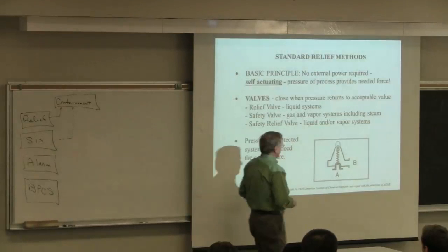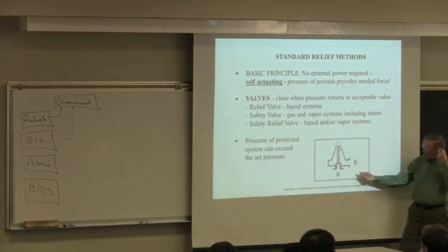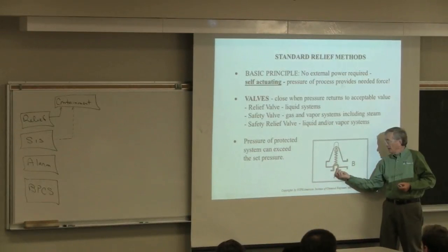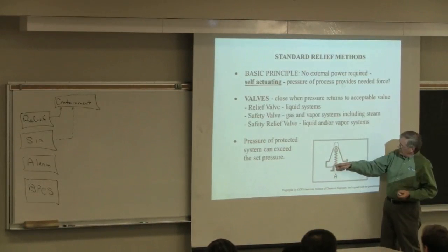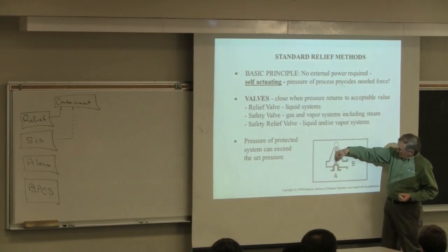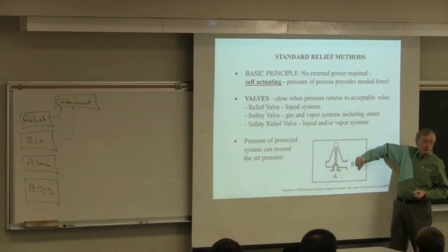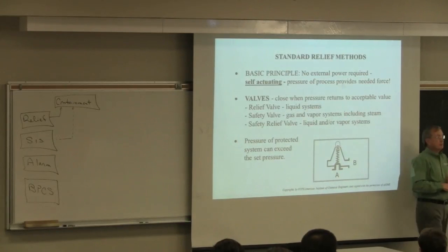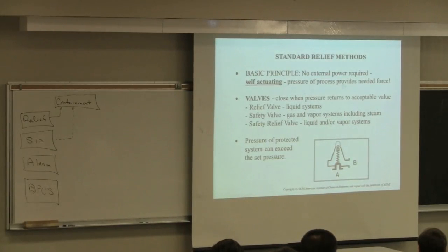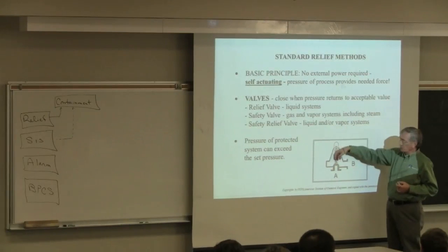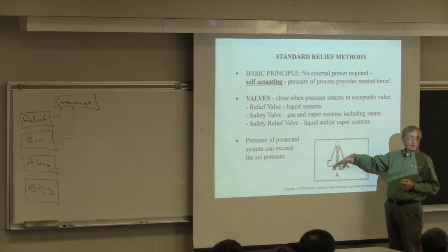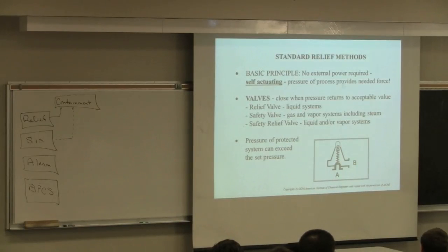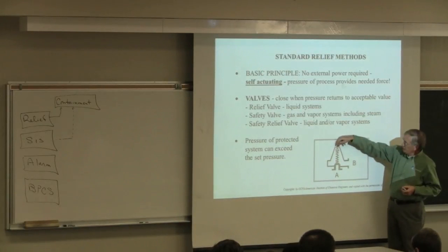To review: the safety valve works one way—pressure in the vessel builds up, pushes against a spring, and then relieves off. To adjust the spring pressure, there's a nut at the top that you can twist to set the pressure within a range. You need the proper spring first, then fine-tune with the nut. Safety valves can handle vapor, liquid, or two-phase flow.